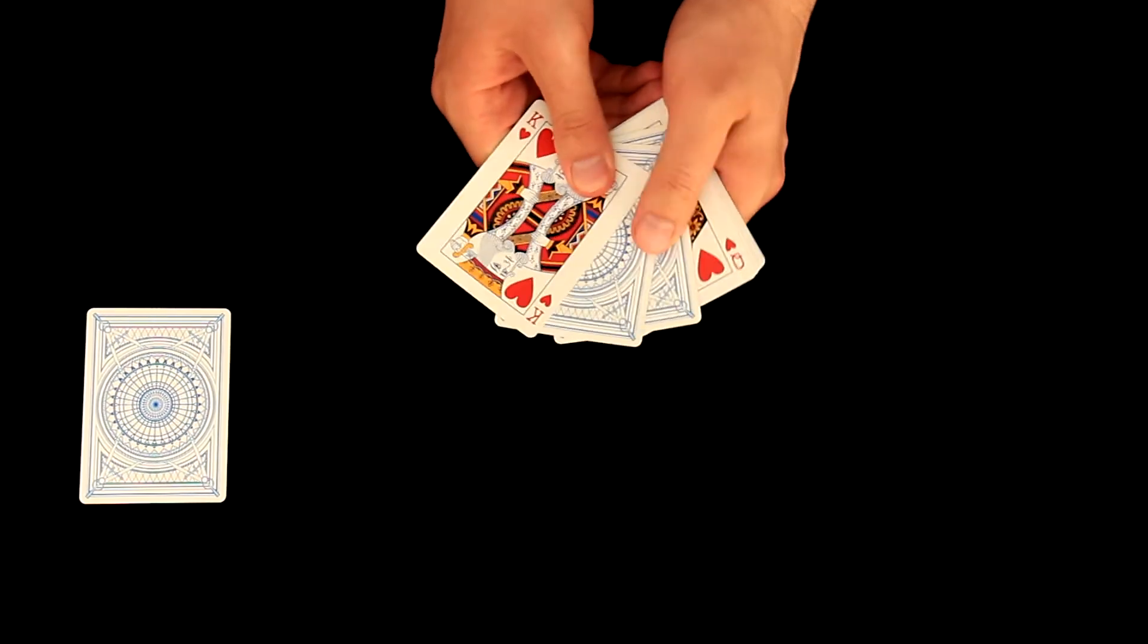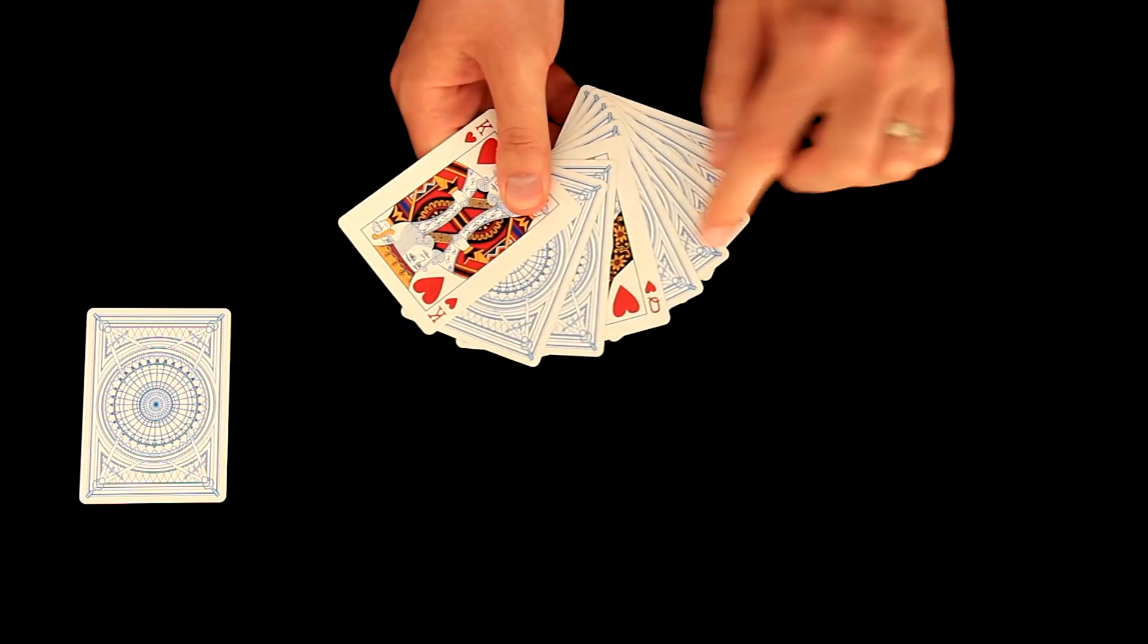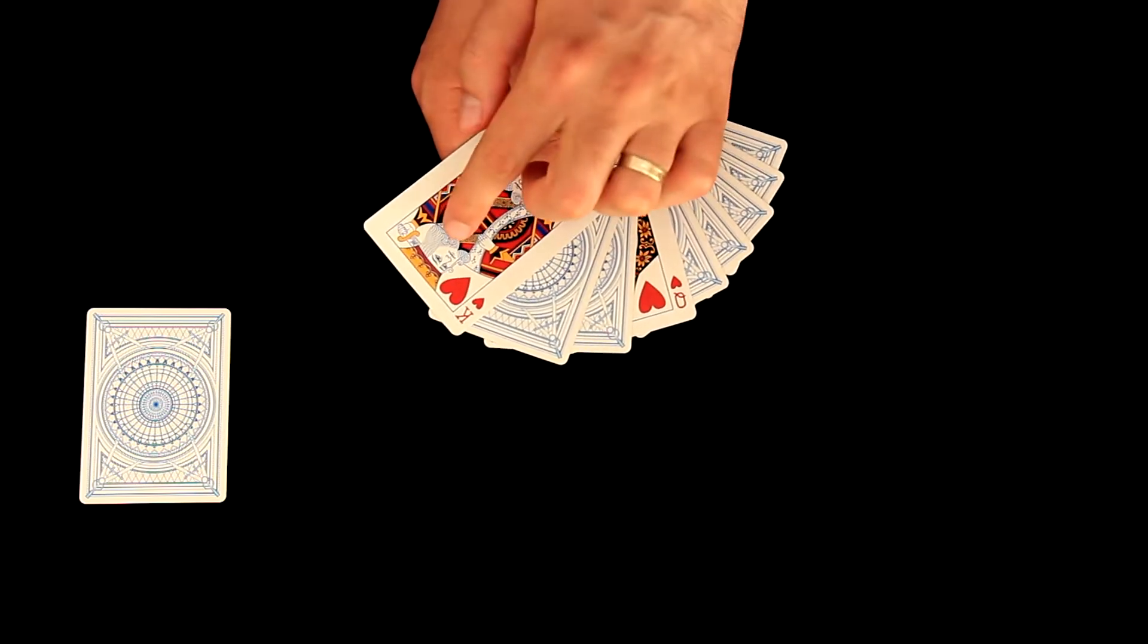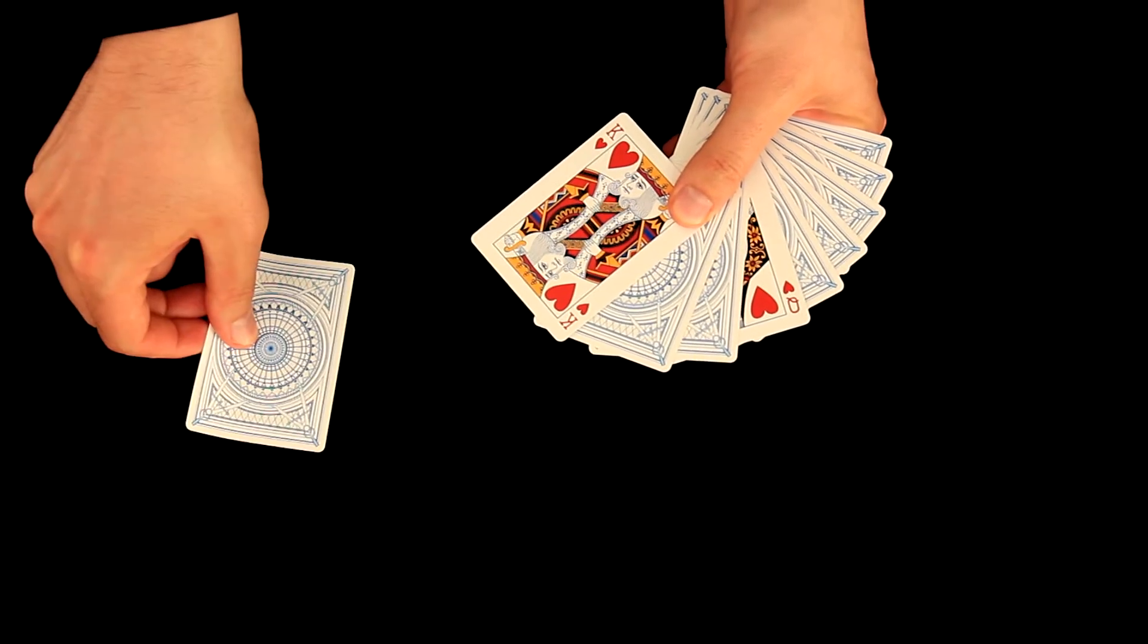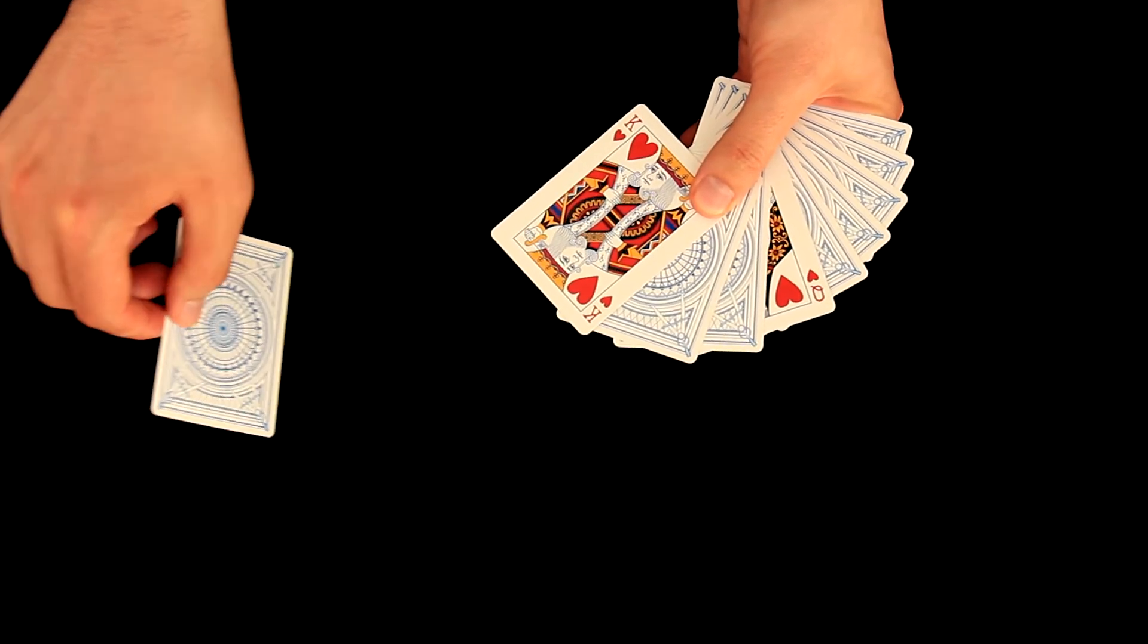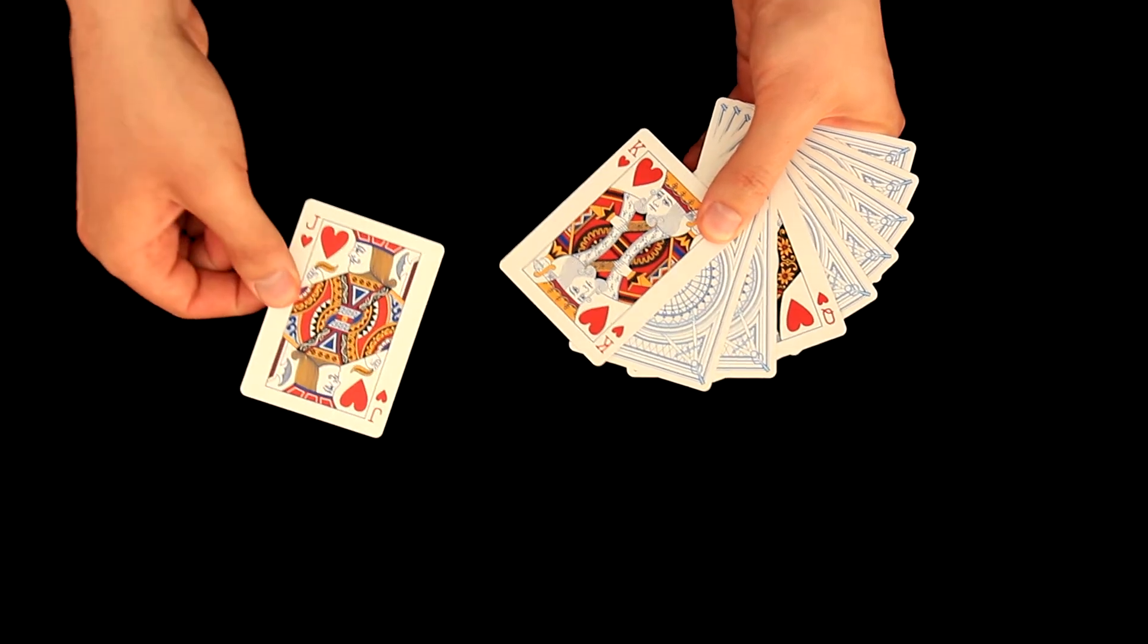Let's continue and finally we have here queen of hearts and king of hearts. The only card missing is jack of hearts and this is the card that was selected by spectator.